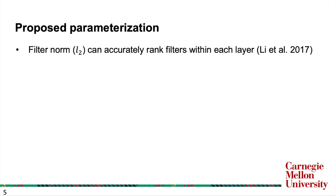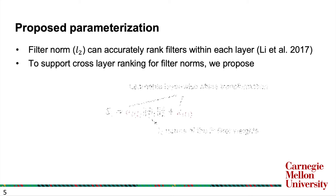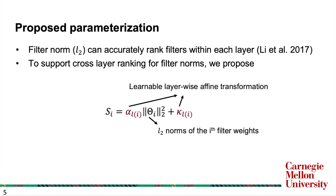We parameterize the global ranking by starting with the empirical result that filter norms can accurately rank filters within each layer. To support cross-layer ranking for filter norms, we propose a new metric that consists of learnable layer-wise affine transformations on top of filter norms. With these metrics, the goal is to learn the parameters alpha and kappa.